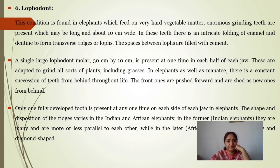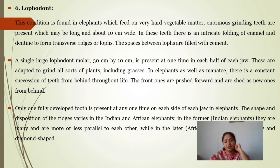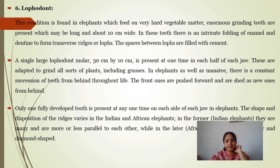This condition is found in elephants which feed on very hard vegetable matter, where enormously large grinding teeth are present. A single large lophondont tooth may be present one at a time in each half of each jaw. These are adapted for grinding all sorts of plants including grasses.